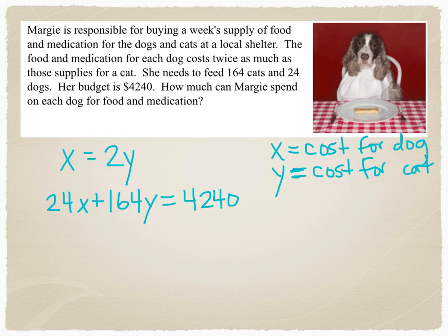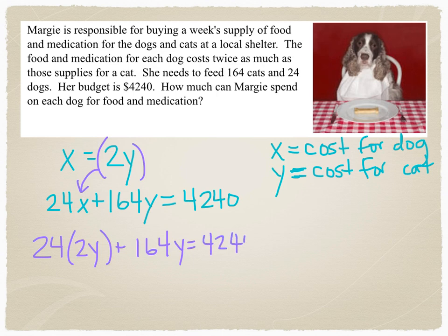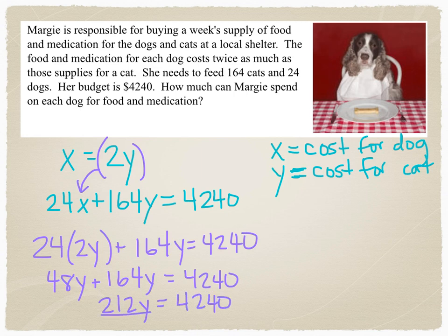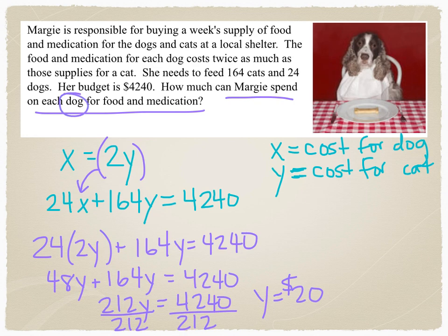I'm going to use substitution here, and I'm going to use substitution by plugging 2Y in the place of X. Because if the two values are equal, one can replace the other. 24 times 2 is 48Y plus 164Y. When you add that together, you get 212Y equals 4,240. And we're going to divide by 212. And I get 20. It costs 20 bucks a cat. Now, that's not what they want. They want how much it costs per dog. So X is the amount per dog, 2 times our value for a cat, which is Y, which is 20. And it costs $40 per dog.